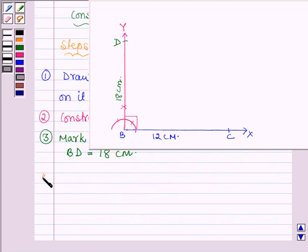In the next step, join DC. And then we shall draw the perpendicular bisector.